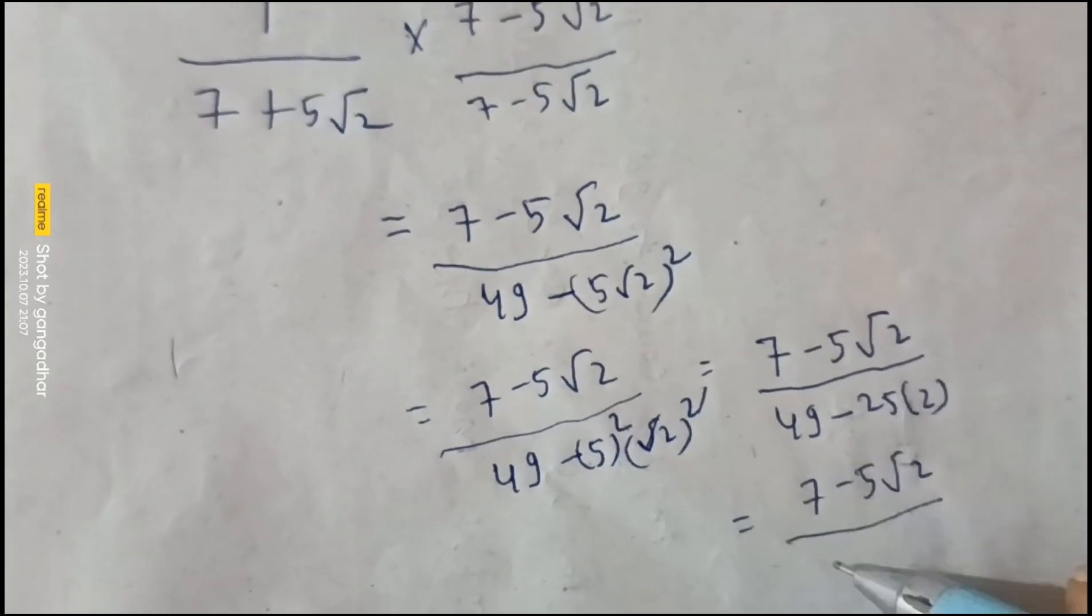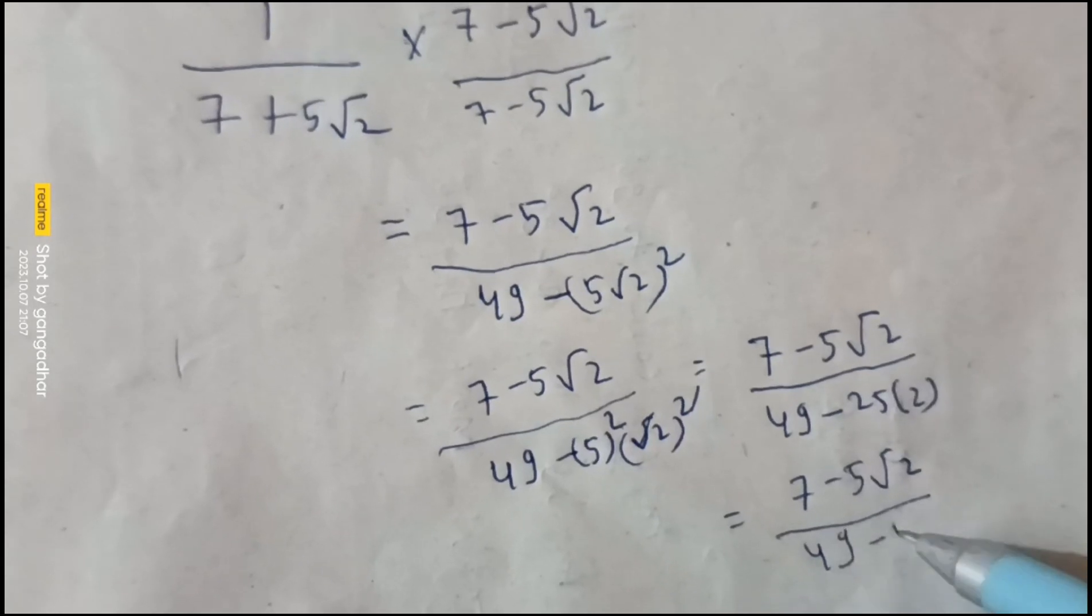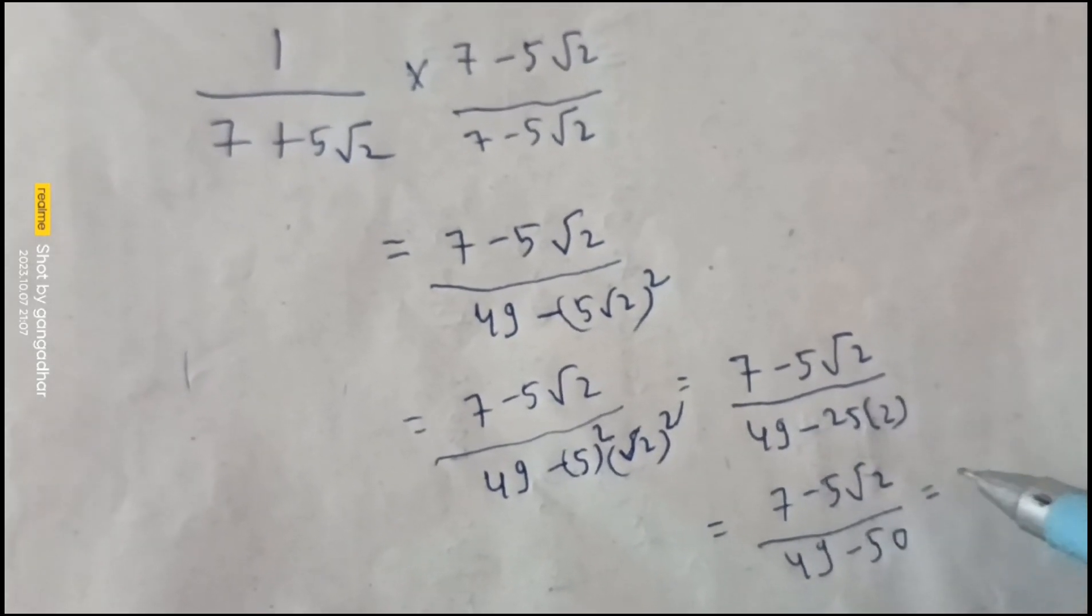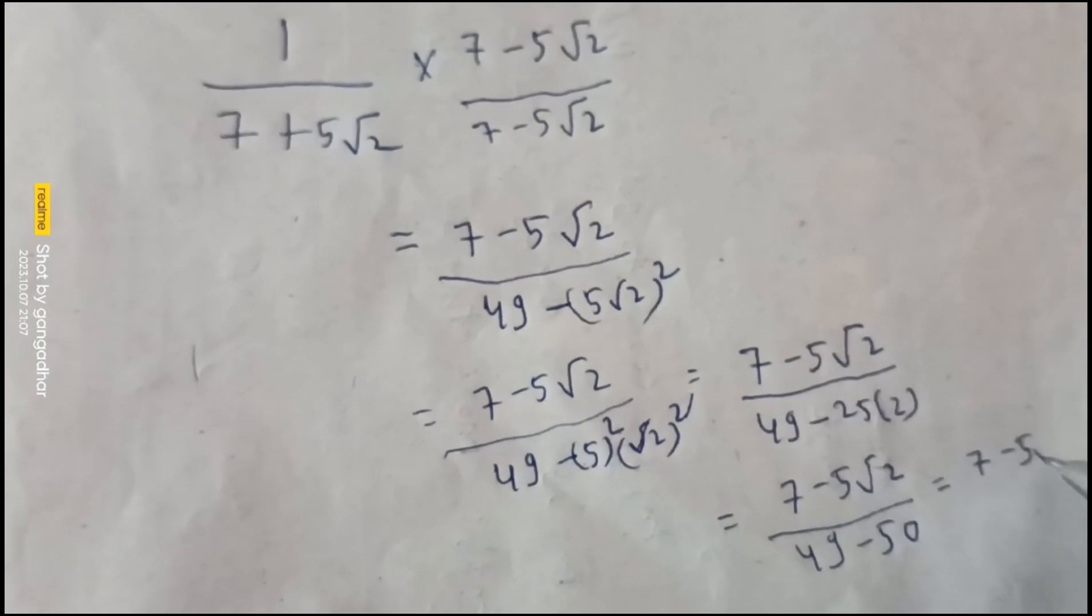Seven minus pi root two. Forty-nine, twenty-five, two is fifty. Forty-nine minus fifty, we get seven minus pi root two.